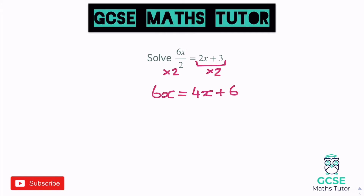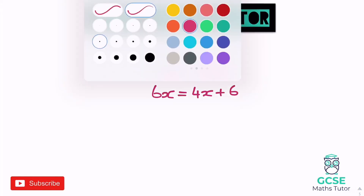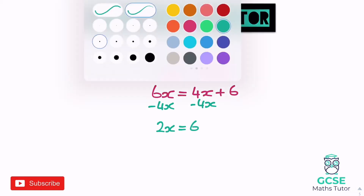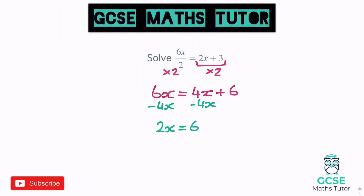Now we've got x's on both sides again, so obviously get rid of the smallest value of x, which is the 4x — so minus the 4x on both sides — and we get 2x equals 6. Then we can divide by 2 to find the value of 1x, and we get x equals 3. There we go, there's the final answer.